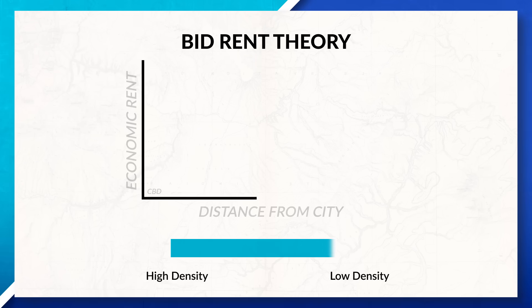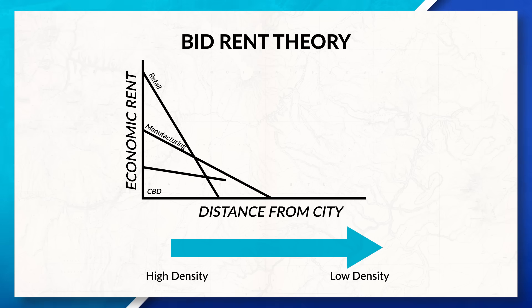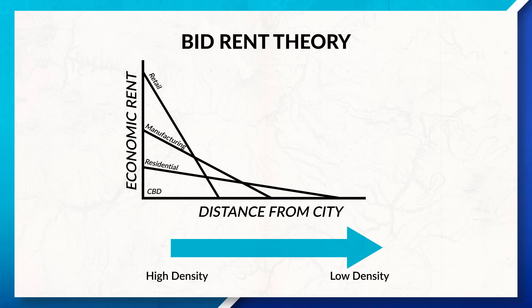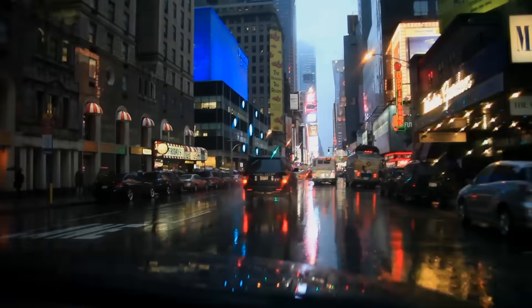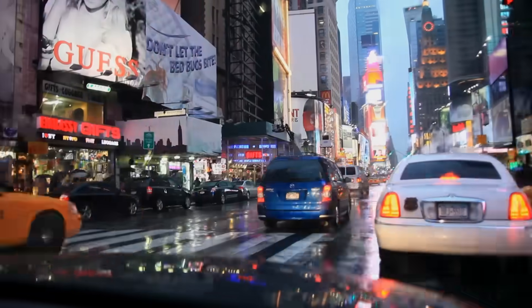Now in order for these models to make sense, you have to remember the bid-rent theory. So we're going to quickly review it before we get into the models. When looking at the bid-rent theory, we can see that as you move farther away from the CBD, the cheaper land gets, which impacts not only the spatial layout of settlements, but the way that land and buildings are used. Places closer to the CBD often see more buildings close together, with expansion happening upwards, while places farther away often expand more horizontally and are more dispersed.